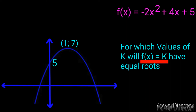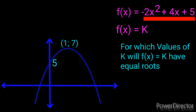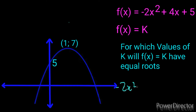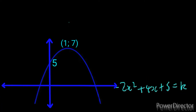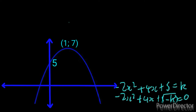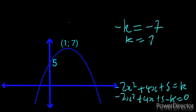Since f(x) must equal k, we take this equation and equate it to k: -2x² + 4x + 5 = k. Taking k to the other side: -2x² + 4x + 5 - k = 0. This represents our vertical shift, which we agreed is negative 7. We take exactly what we see — the negative k — and equate it to -7. Dividing both sides by -1, we get k = 7.